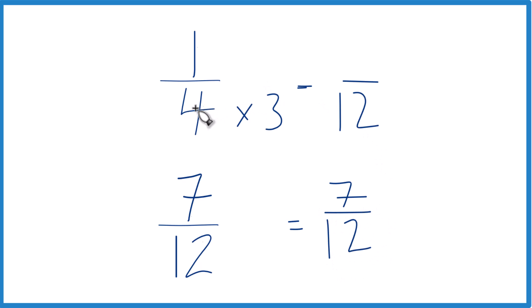And now since we multiplied 4 times 3, we do need to multiply the numerator by 3 as well. Let's just 3 divided by 3 is just 1. So we're multiplying by 1. We don't change the value, just the way it's represented. 1 times 3, that is 3.